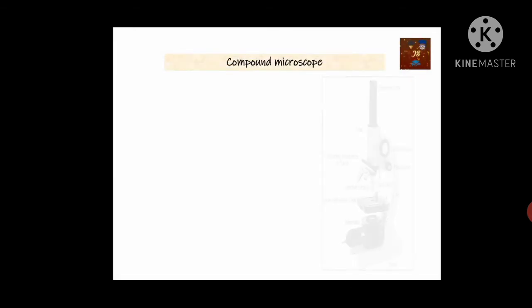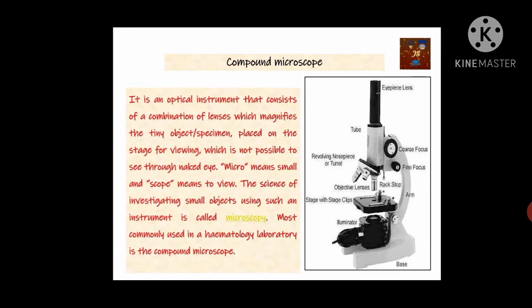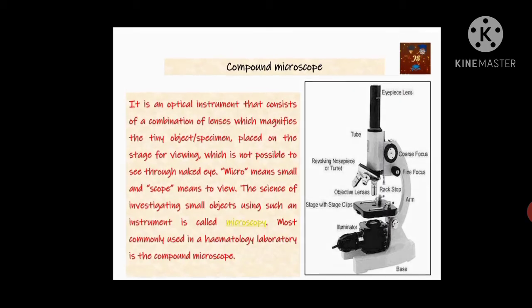First we will discuss the compound microscope. 'Micro' means small — objects which cannot be detected by the naked eye — and 'scope' means to view. So a microscope is an instrument that helps us view objects which cannot be seen with the naked eye. The science dealing with observing small objects using a microscope is called microscopy. In a hematology laboratory, the most important type of microscope is the compound microscope.